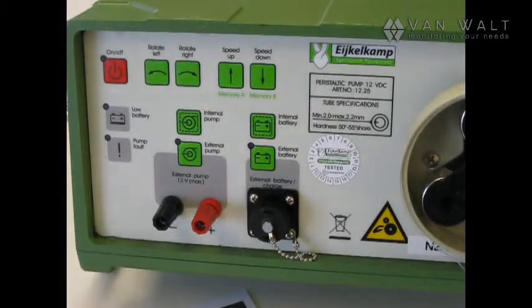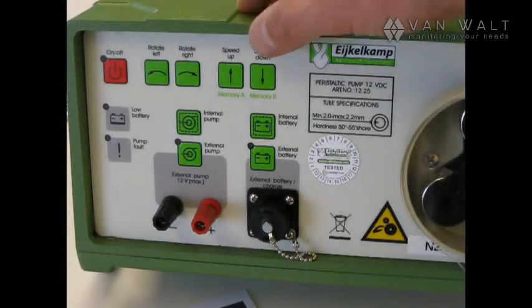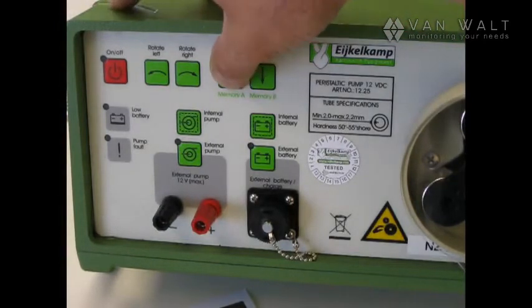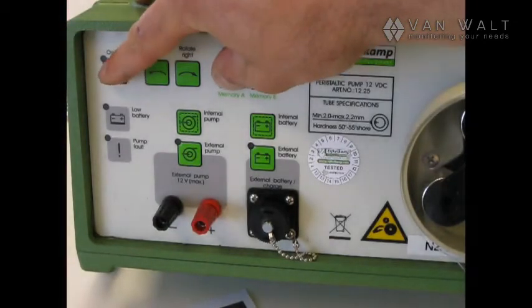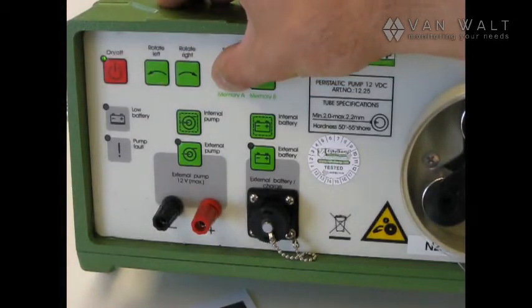There's two memory functions on the machine. Memory A and memory B. To program the memory functions, I'm going to hold down memory A. I'm going to turn the pump on and wait for at least three seconds. One, two, three, four.